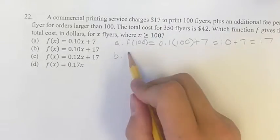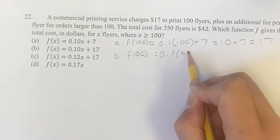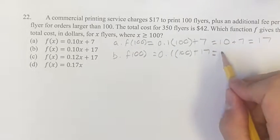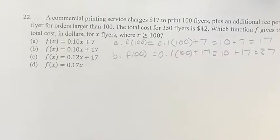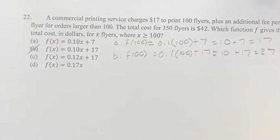For B, f(100) equals 0.1 times 100 plus 17. 0.1 times 100 is 10, plus 17 is 27. This is not what we're looking for. We're looking for 17, so B is out of the mix.